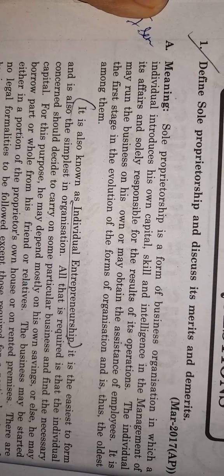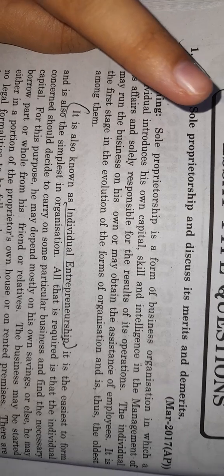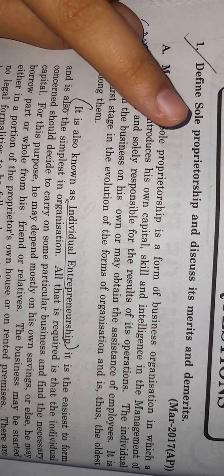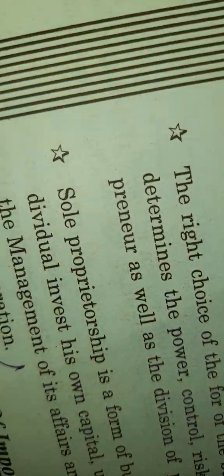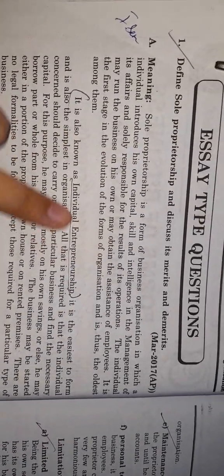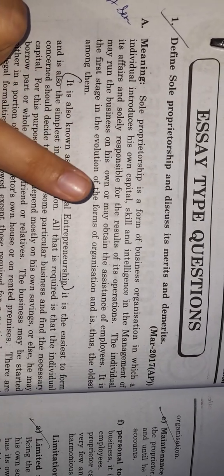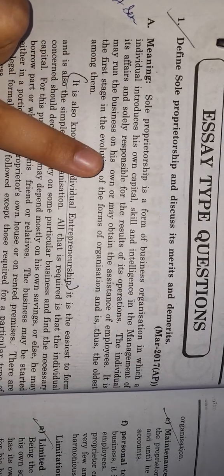In today's video, we will cover the advantages and disadvantages of sole proprietorship. Sole proprietorship means a single person who does business. Sole means single, proprietorship means business. It is the form of business organization in which an individual introduces his own capital, skills, and intelligence in the management of its affairs and is solely responsible for the results of its operations.